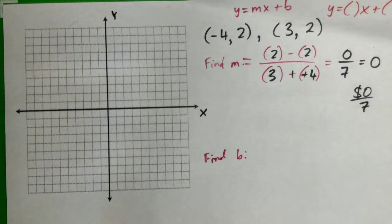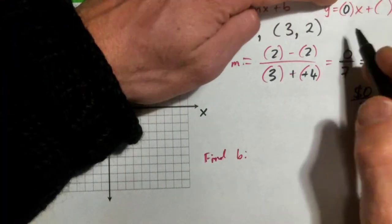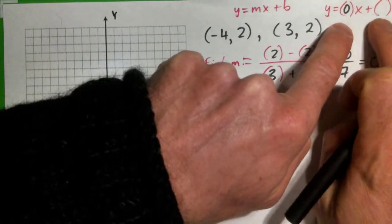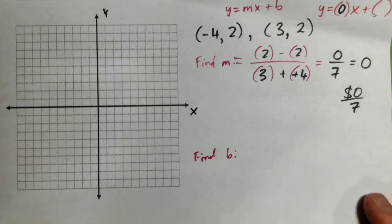Anyway, so the point is we found m. In fact, you can plug that into the answer: y = mx + b. y = 0x + something, wherever the b is. Anyway, now we have to find b.